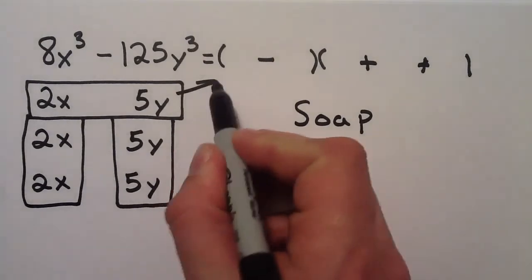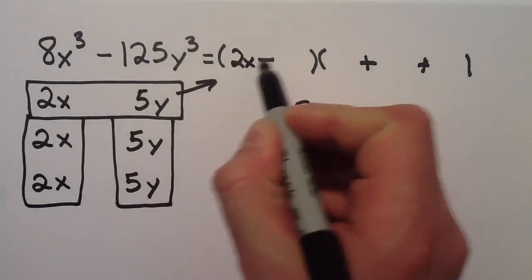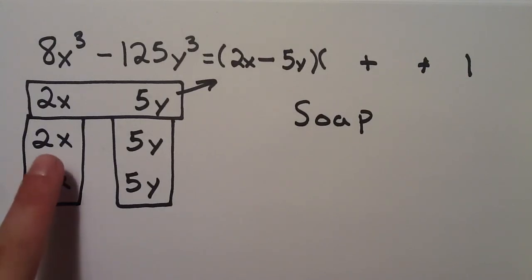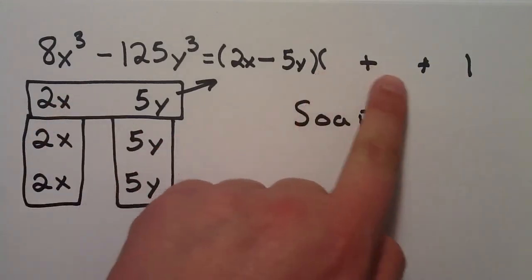Remember, I just took this top box and inserted it right here. And I multiply each one of these boxes. 1, 2, 3. 1, 2, 3.